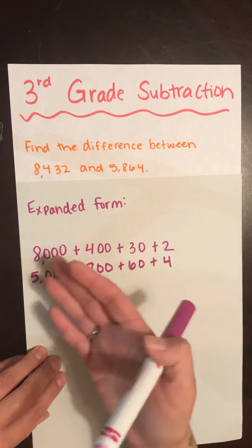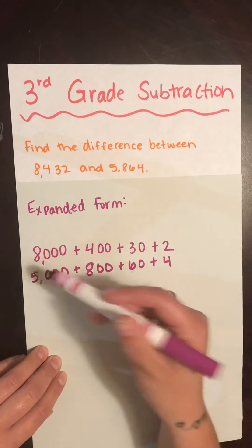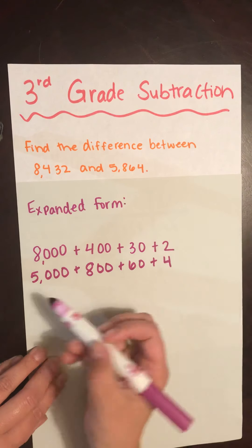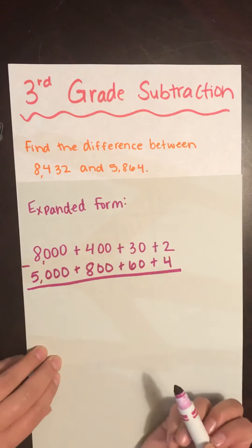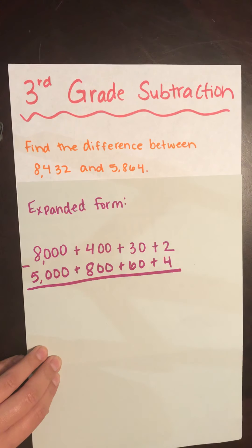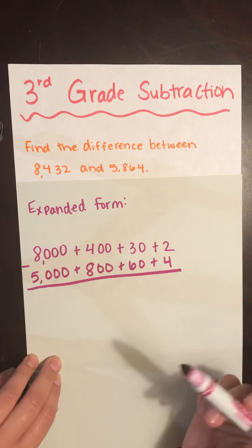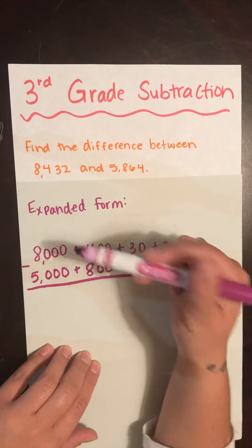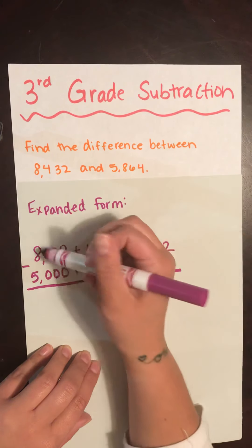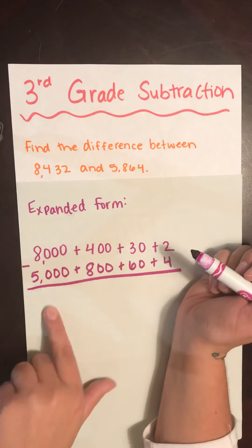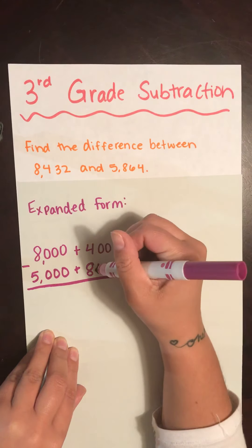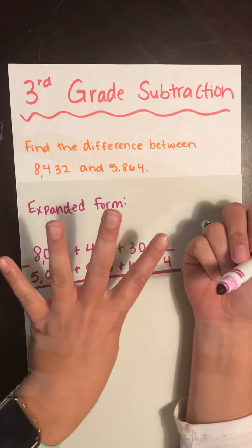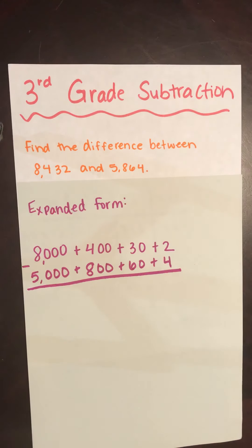5,864 becomes 5,000 plus 800 plus 60 plus 4. Notice I wrote all my numbers lined up — that's going to help keep things in order. If you start writing things all over the place with sloppy handwriting, math gets really tricky. Also notice I wrote all of my numbers first, then my equation line, and then the subtraction sign — those are always the last thing you write. Now we are subtracting. We need to ask ourselves: do I need to regroup? The way we ask is: is your top number bigger than your bottom number? Is 8 bigger than 5? Yes, so I don't need to regroup — I can do 8 minus 5. Is 4 bigger than 8? No, so we have to regroup.